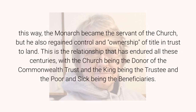This way, the monarch became the servant of the church, but he also regained control and ownership of title in trust to land. This is the relationship that has endured all these centuries, with the church being the donor of the commonwealth trust, the king being the trustee, and the poor and sick being the beneficiaries.